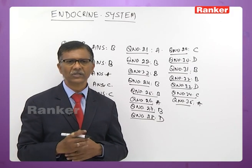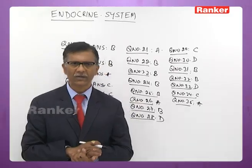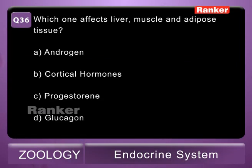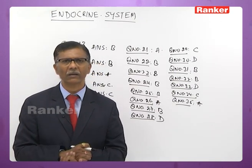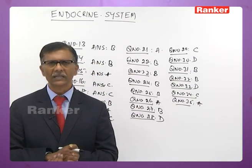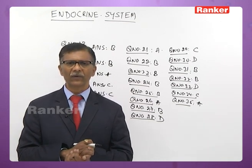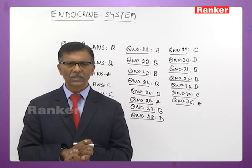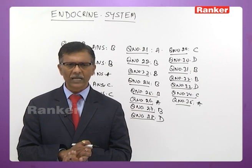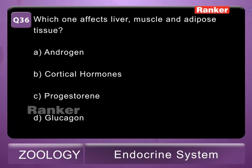Thirty-sixth question: which one affects liver, muscle, and adipose tissue? Options include androgen, cortical hormones, progesterone, and glucagon. Cortical hormones secreted by the adrenal cortex have influence on liver, muscle, and adipose tissue. The correct answer is B — cortical hormones.